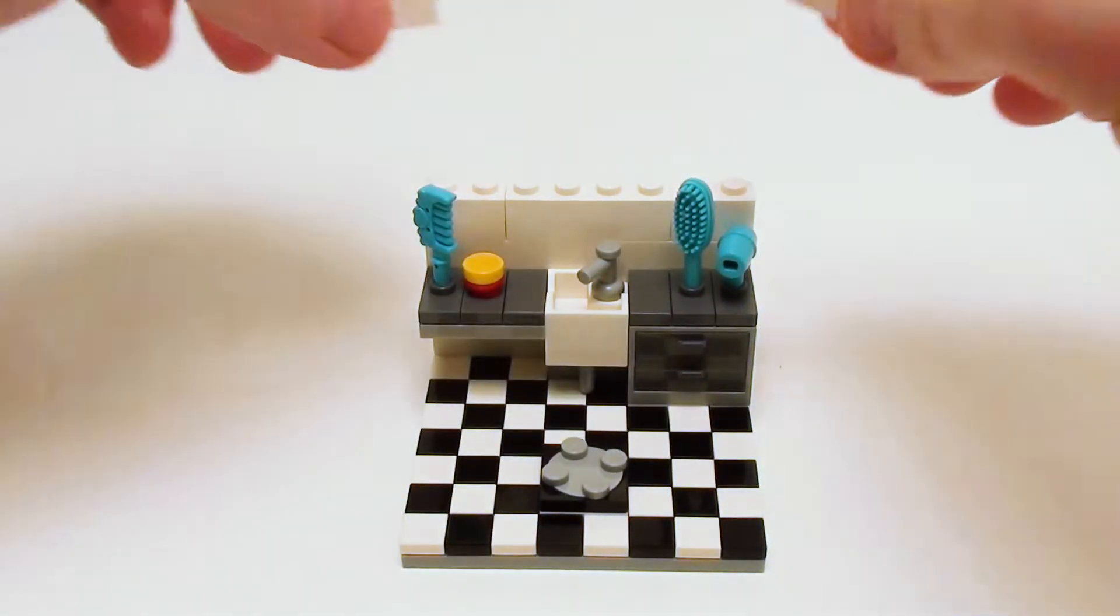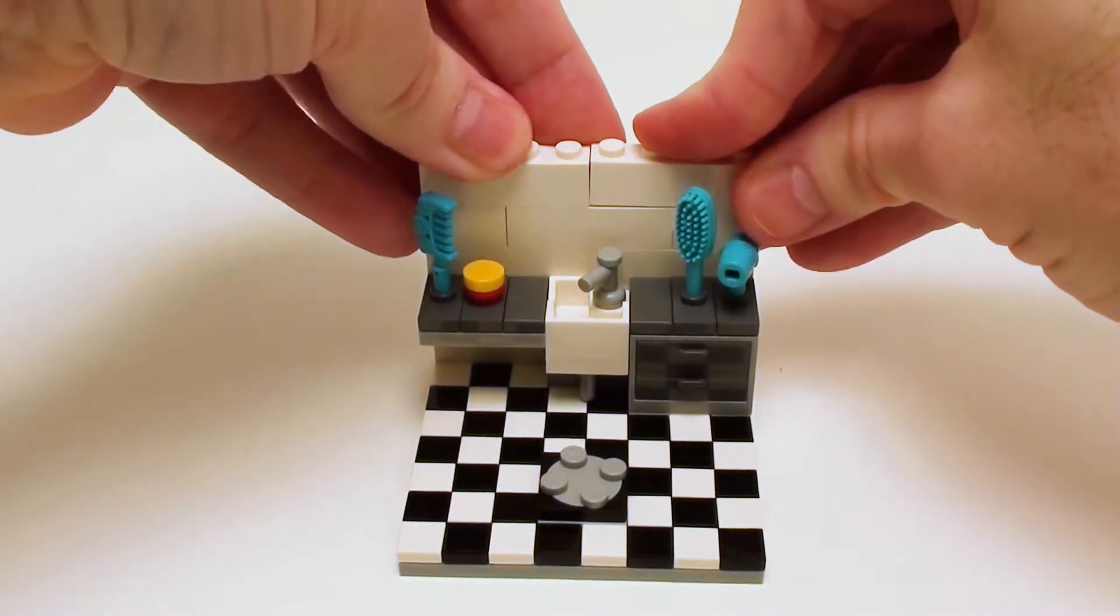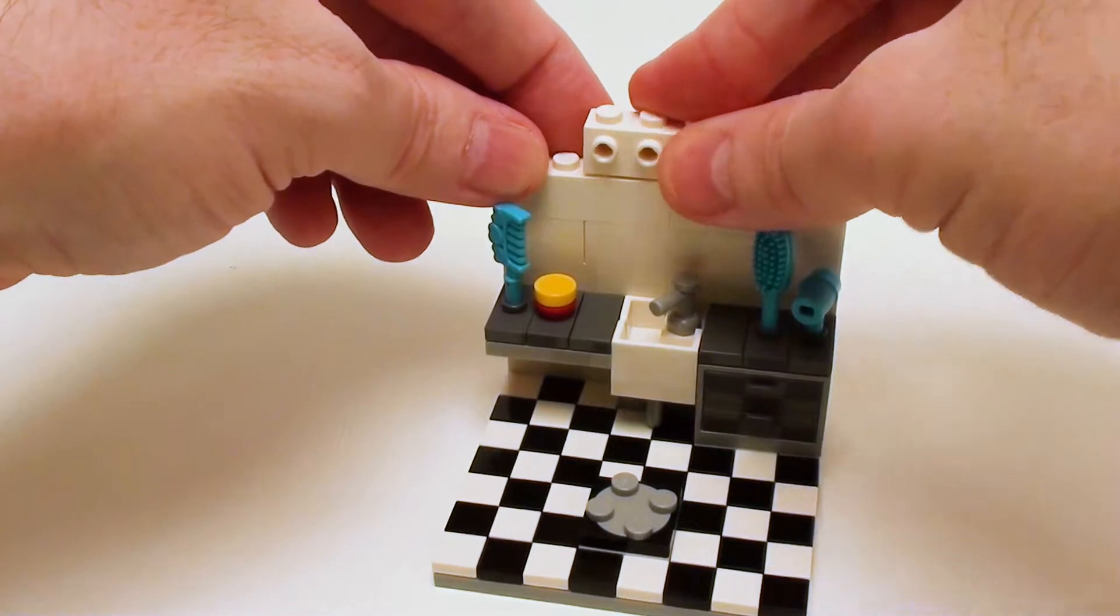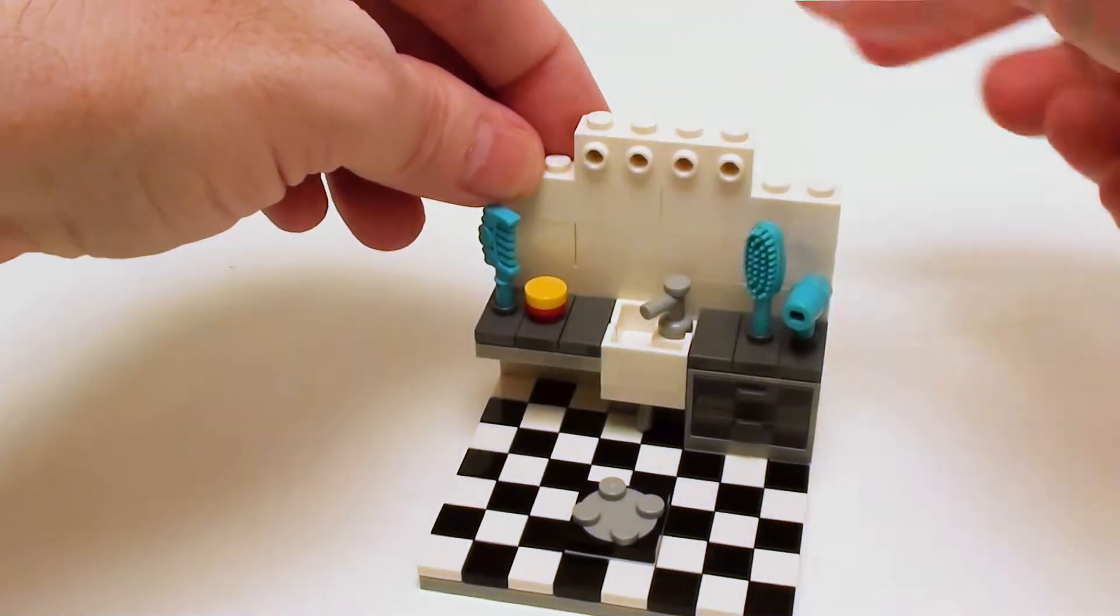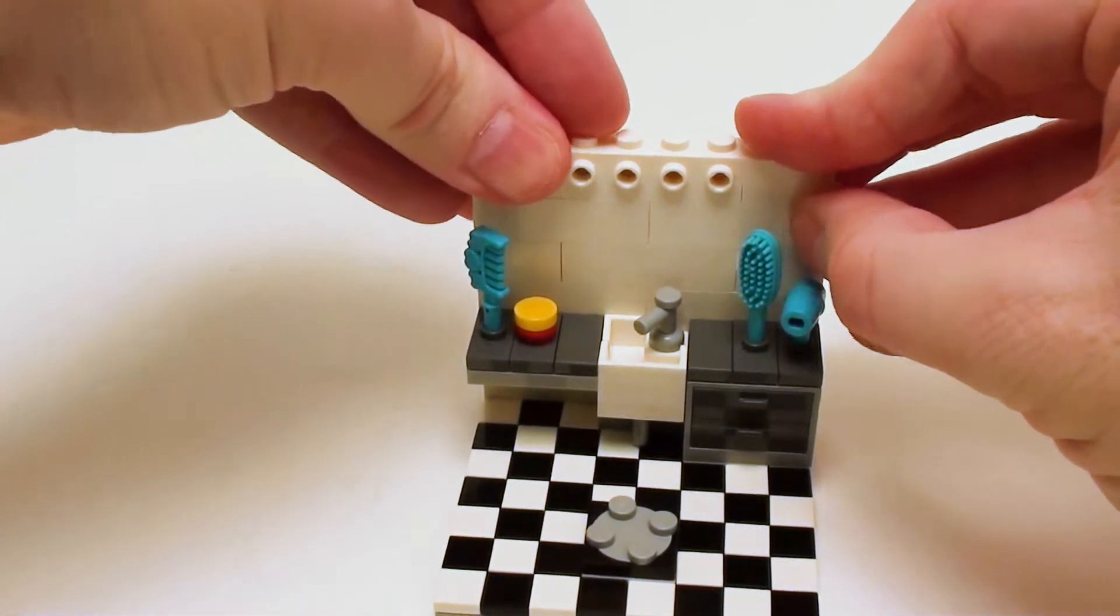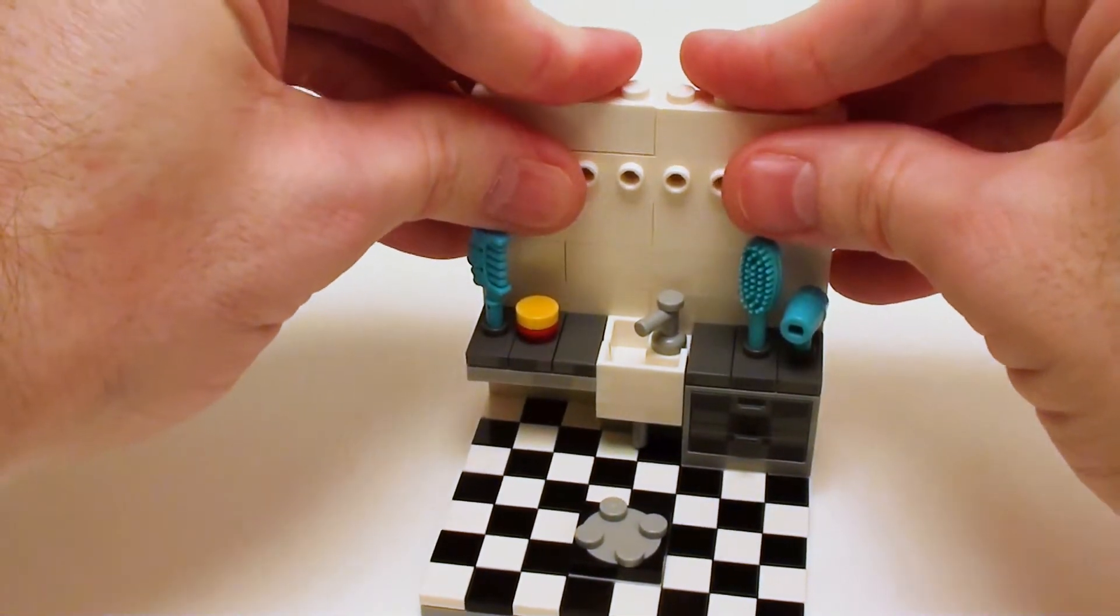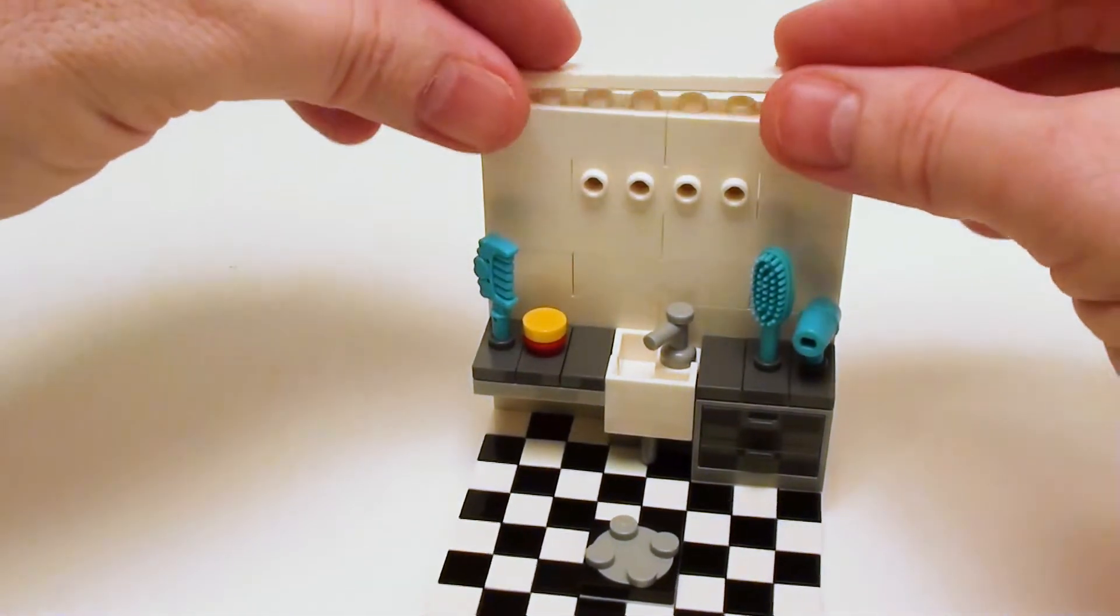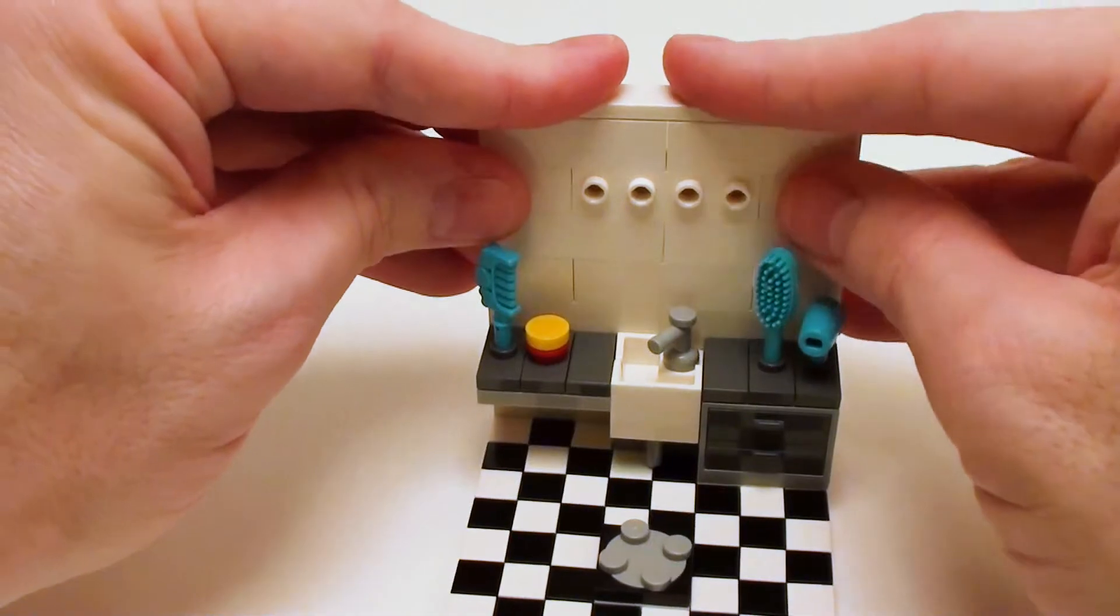Now let's continue the wall with 2 1 by 4 bricks. Now let's add a 1 by 4 brick with 4 studs on the front followed by 2 1 by 2 bricks. And let's wrap up the wall with a pair of 1 by 4 bricks and a 1 by 8 flat tile. Let's finish off the top.